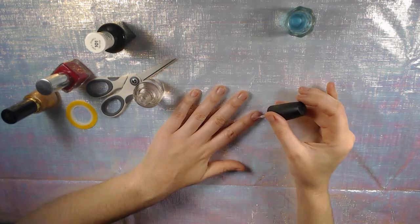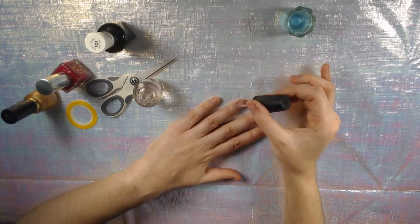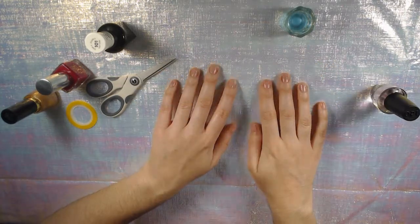So I'm doing my base coat here. It is the OPI two-in-one base and top coat. But as you may or may not know, I don't put it on top, just on the base to protect my nails from staining.